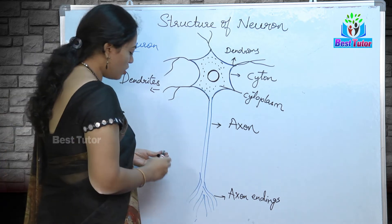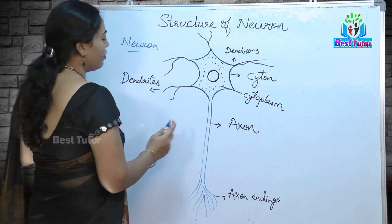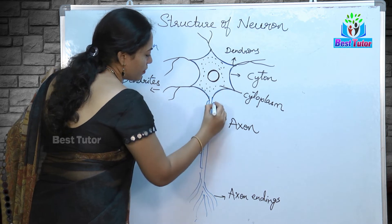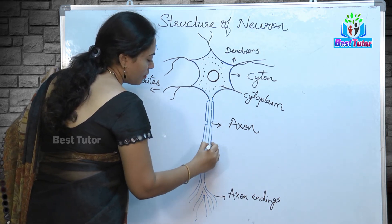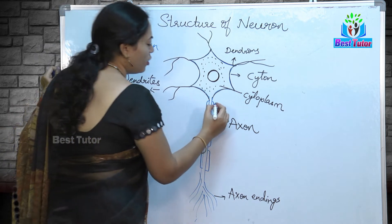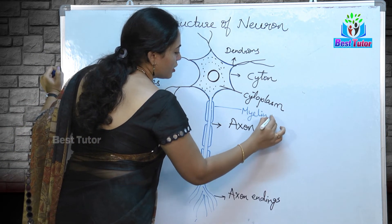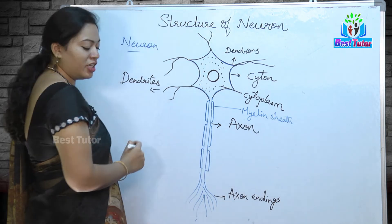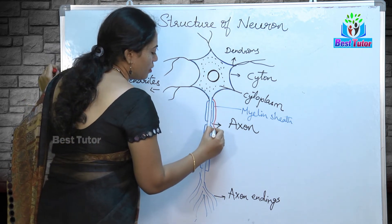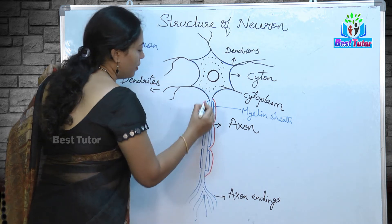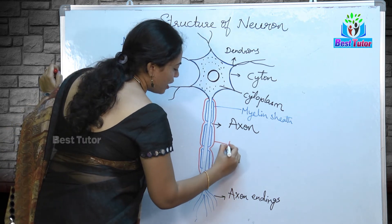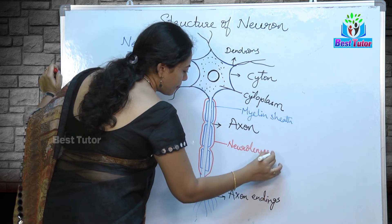If we examine the axon structure, the axon is covered by a membrane known as myelin sheath. The entire length of the axon is covered by this insulating material called myelin sheath, which is in turn covered by another protective membrane known as neurolemma.